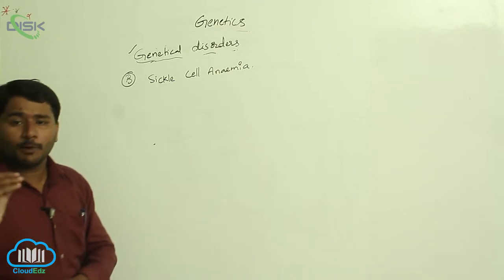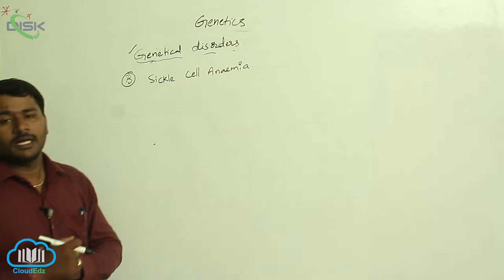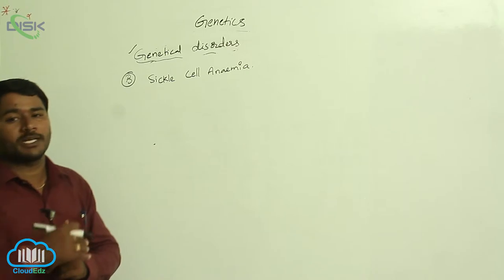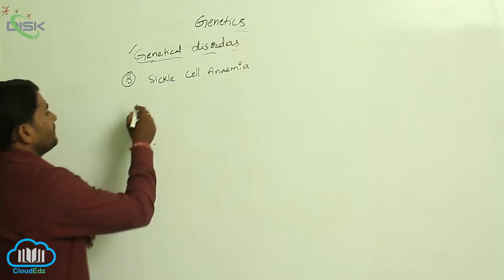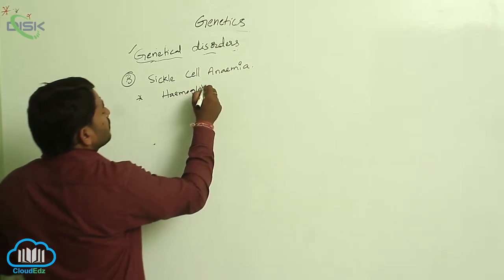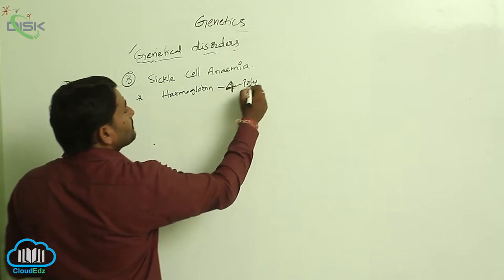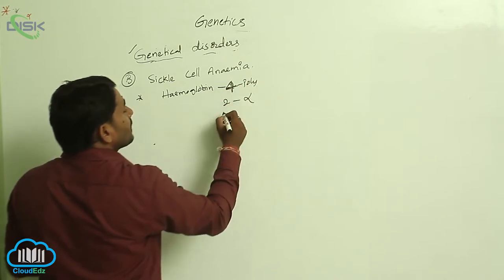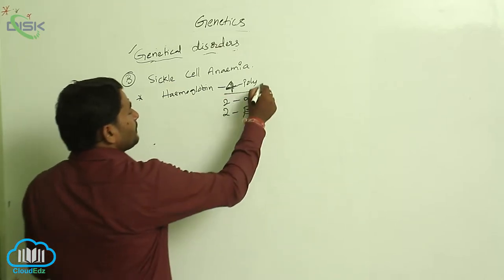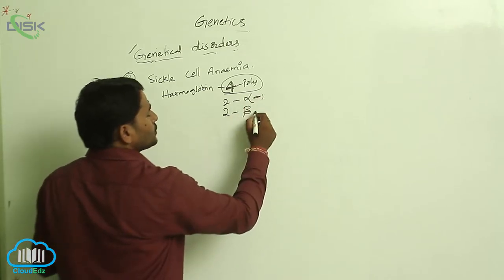Why is it an autosomal disorder? Because whenever point mutations take place in the gene, it leads to the production of a different polypeptide chain. Generally, hemoglobin has four polypeptide chains — two are alpha polypeptide chains and two are beta polypeptide chains. So this is a tetrapolypeptide molecule: 2 alpha, 2 beta.